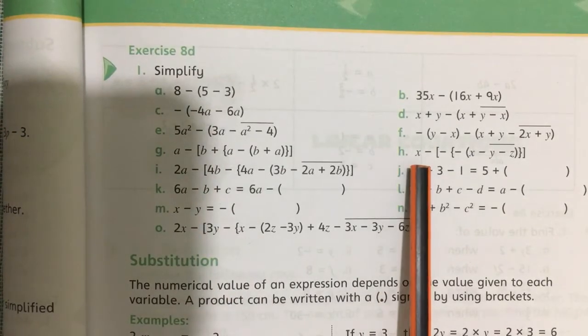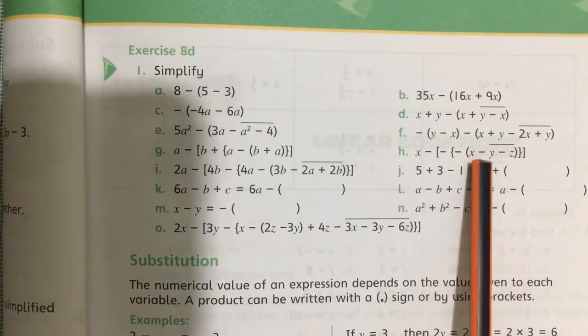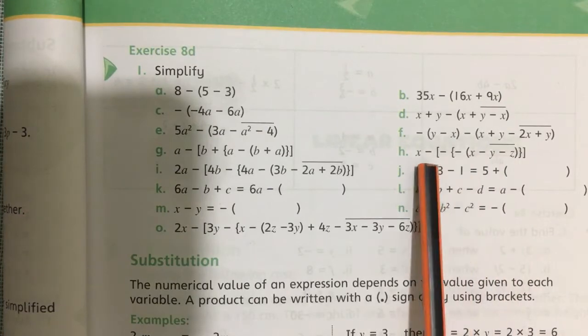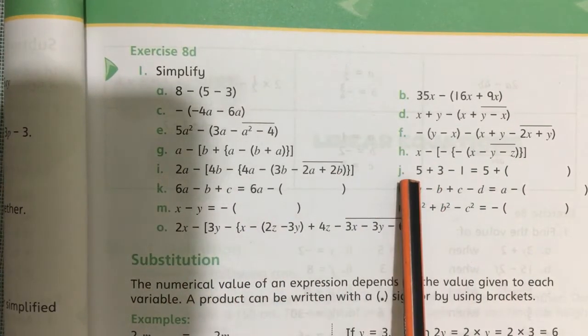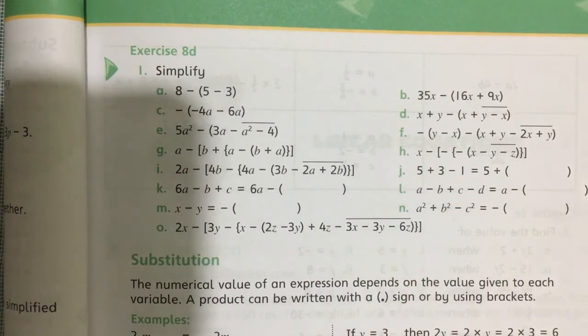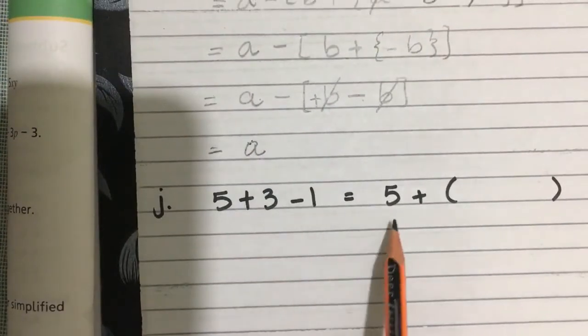After g, next is h. H is also the same, so you have to solve first small bracket, then curly bracket, and then square bracket. I is also the same. Then j: j is 5 plus 3 minus 1 equals 5 plus bracket.